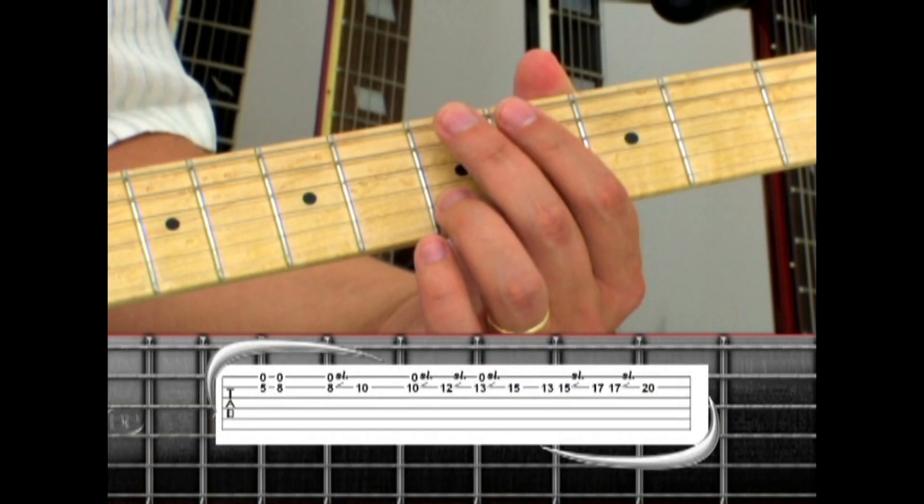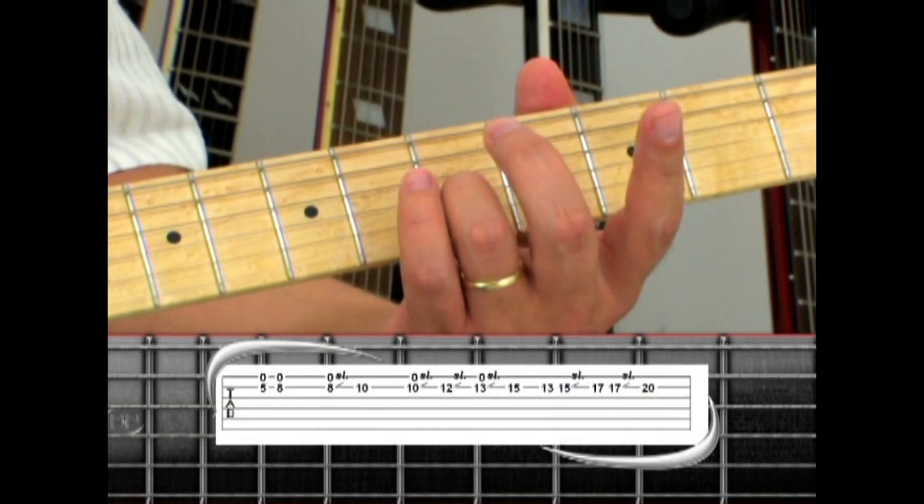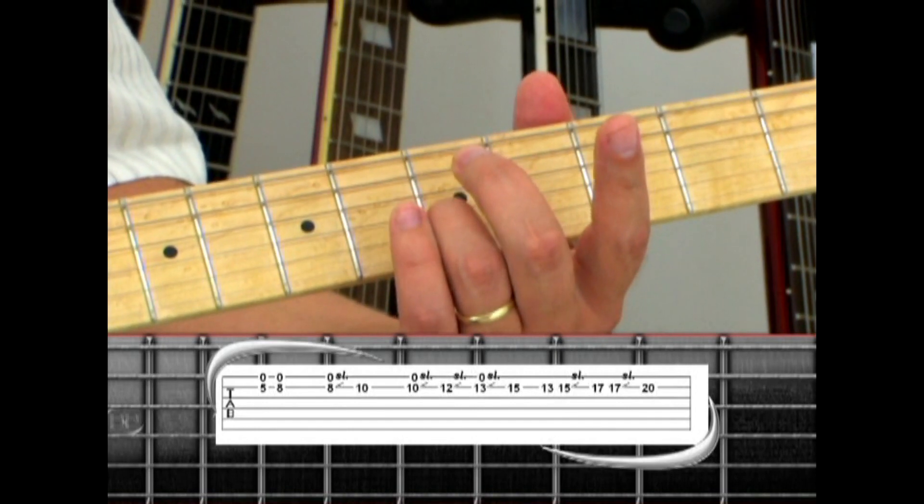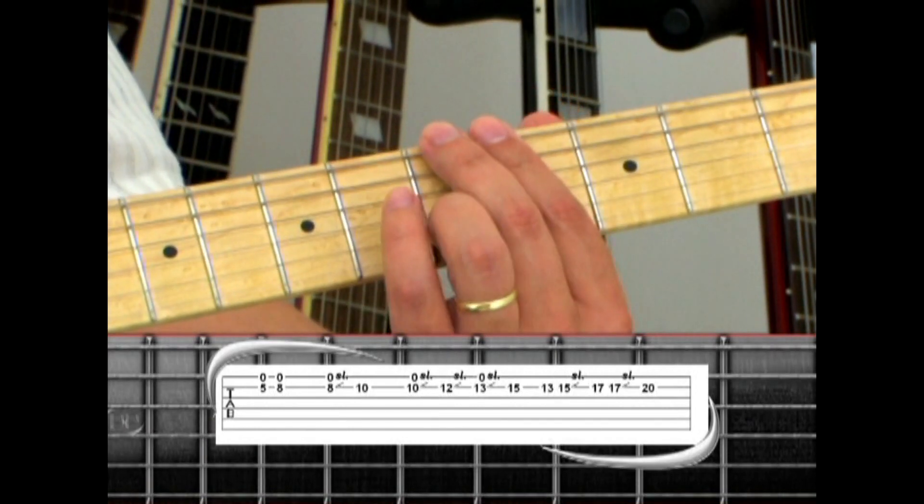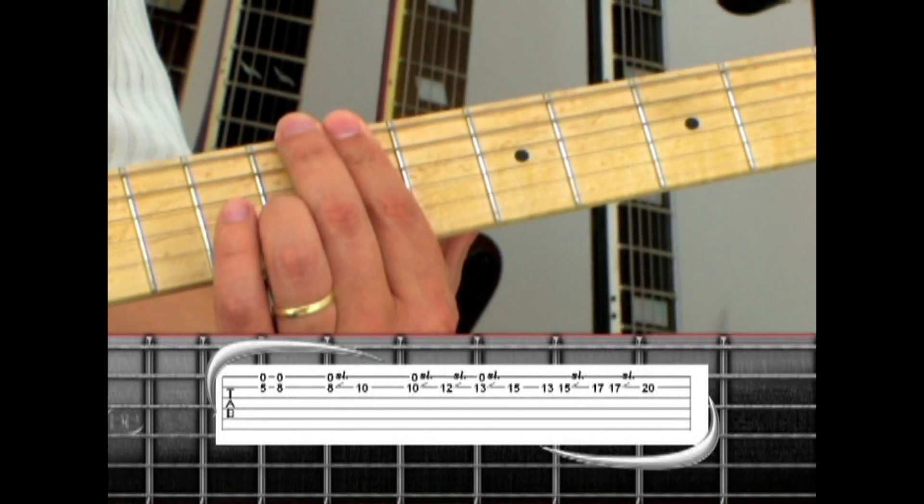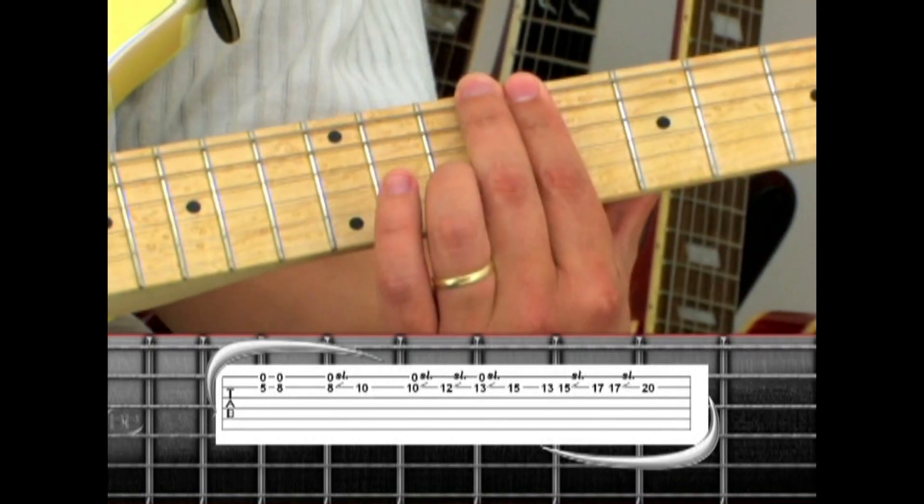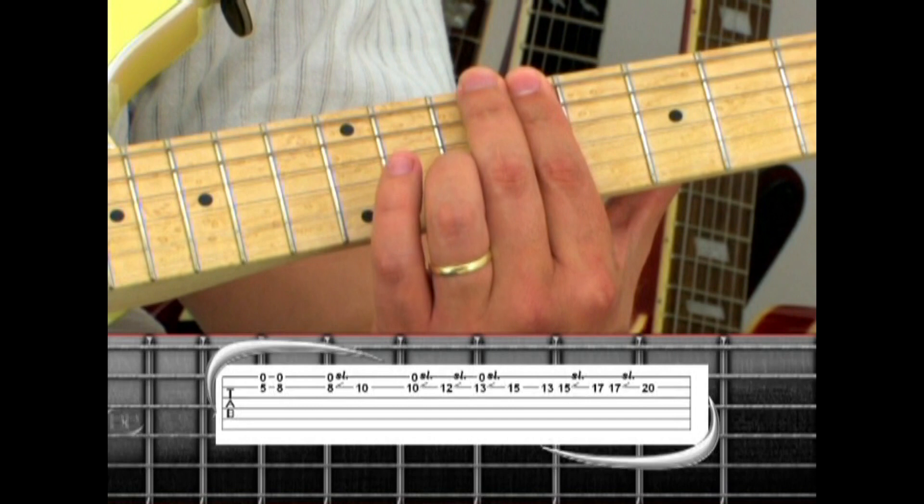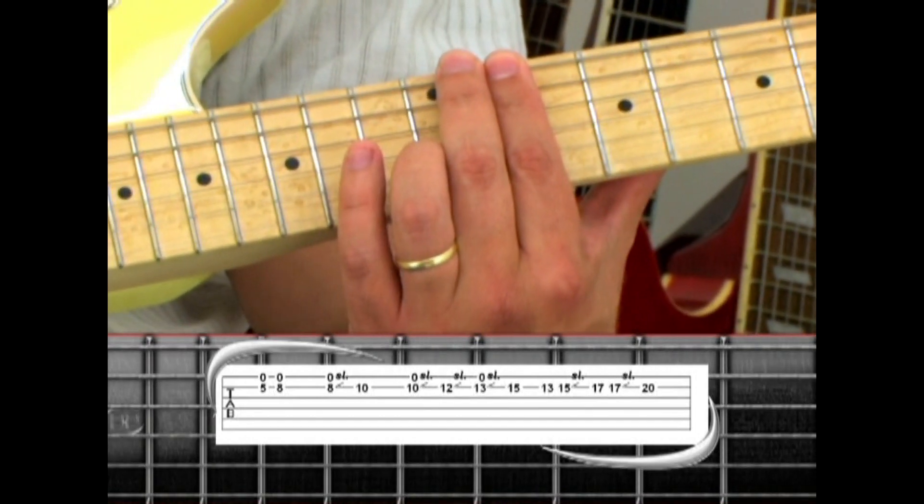Phrase six uses the same structure with open first string drone notes, along with second string fretted notes. Five, then eight. Eight slide to ten. Ten slide to twelve. Thirteen slide to fifteen.